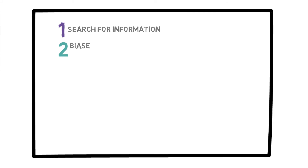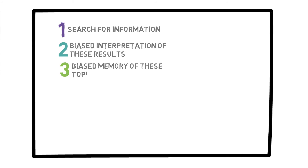Essentially, the confirmation bias can be broken down into three stages or parts. First, there is the biased search for information. Secondly, there is the biased interpretation of those search results. Finally, this usually results in that person having a biased memory when it comes to that topic or event.